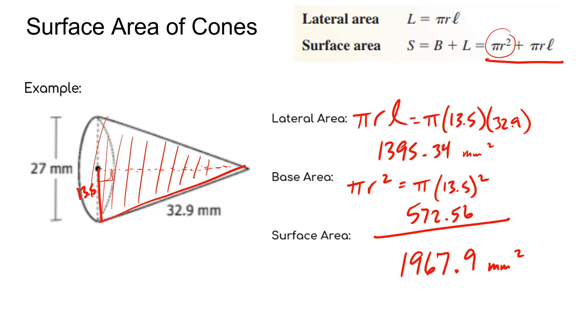If you're doing that, just make sure you use parentheses, especially when you get to that slant height. But you could do the whole formula πr² plus πr times the slant height. You can plug in your 13.5 squared plus π times your 13.5 times, in parentheses, your slant height of 32.9. If you plug that all into your calculators and just hit enter, you should get the exact same answer as we just found.